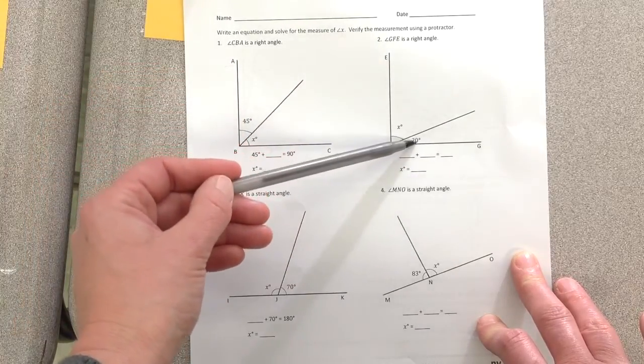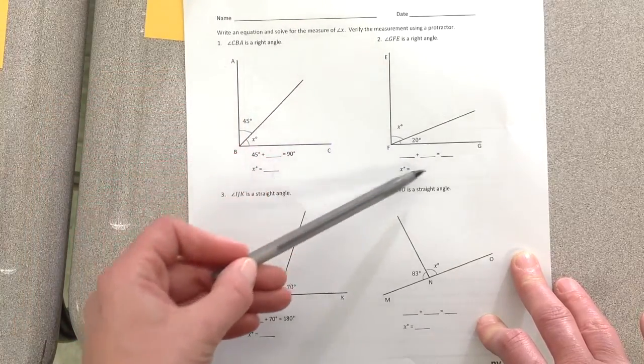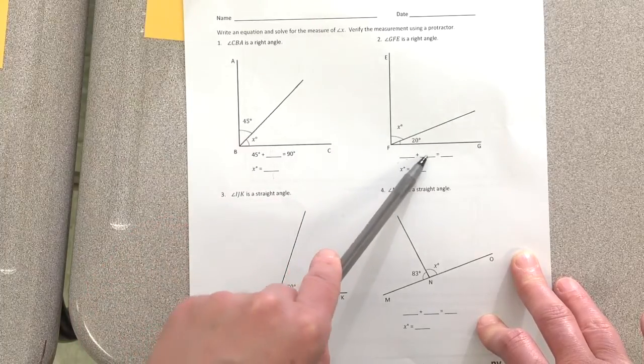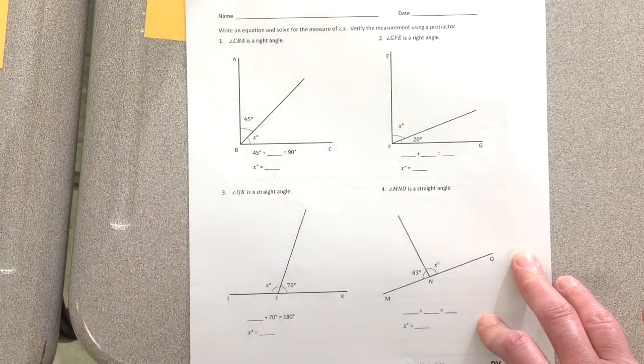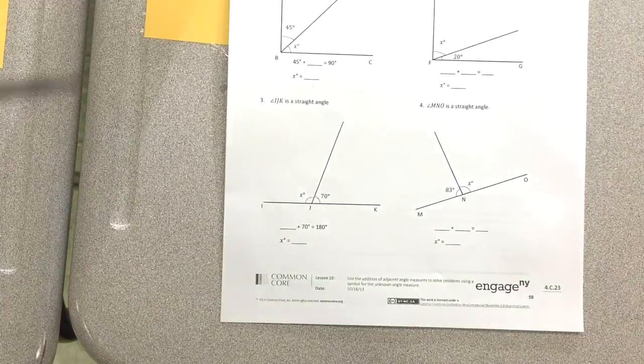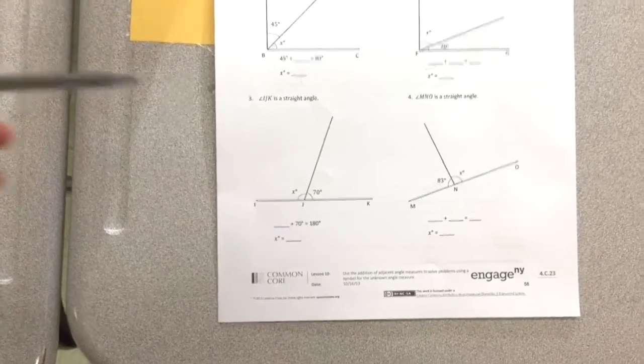This part is 20. Now you're going to have to fill in all of it here. So you're going to have to put in the angle you know, the angle you don't know, and you know that it's a right angle. So you should know how many degrees that is.